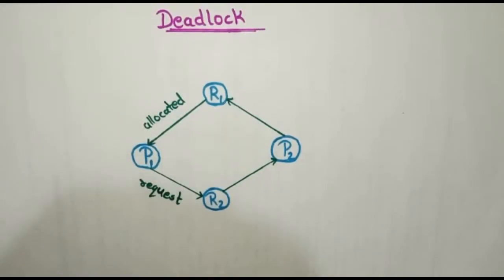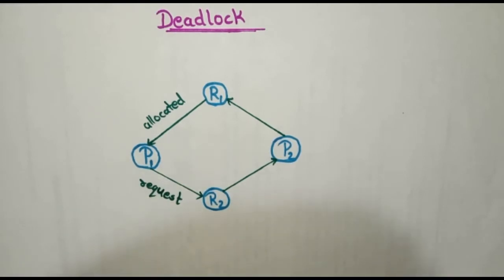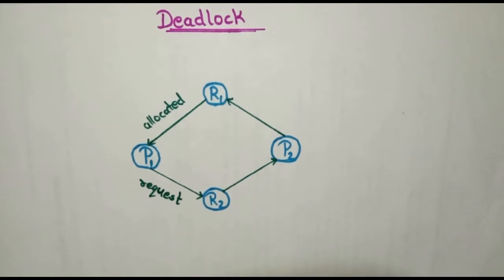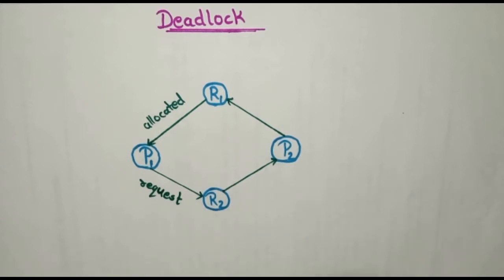Coming to the next topic in an operating system is deadlock. Deadlock is a situation or a condition — it is a problem that blocks something. A deadlock state occurs when two or more processes are waiting independently for an event that can be caused only by one of the waiting processes.